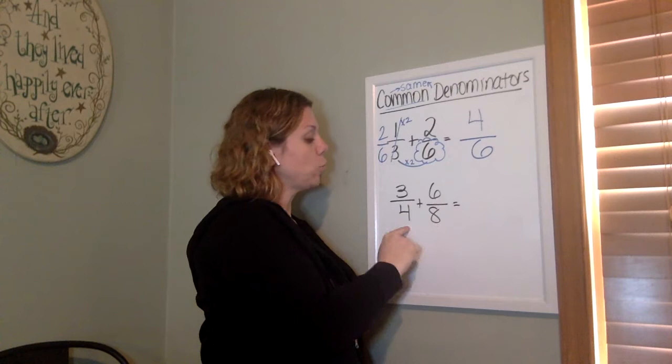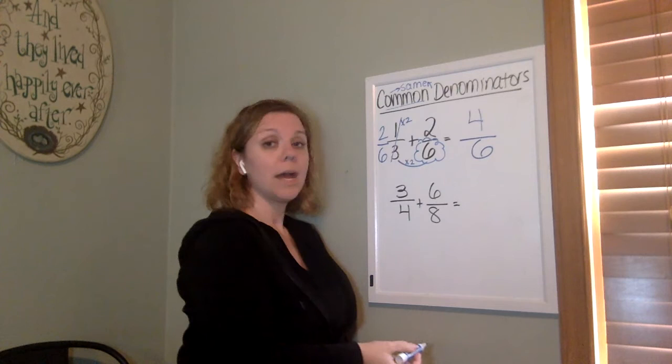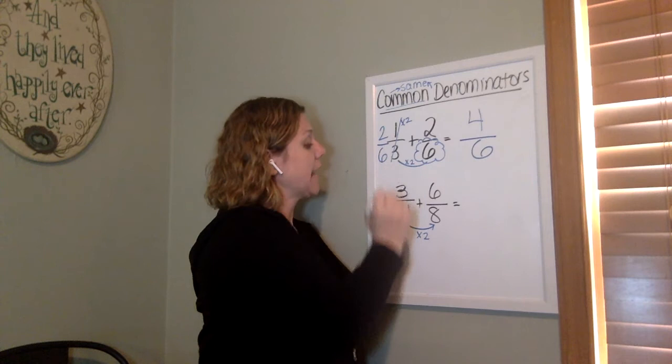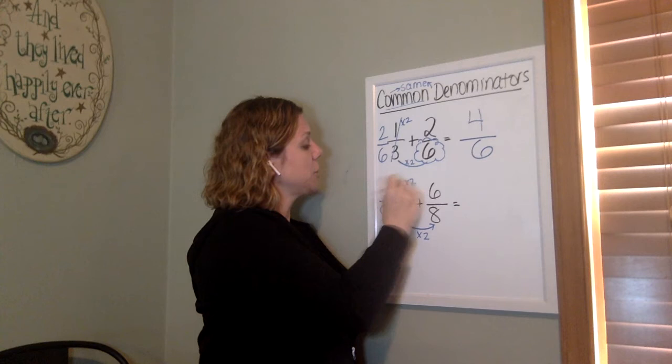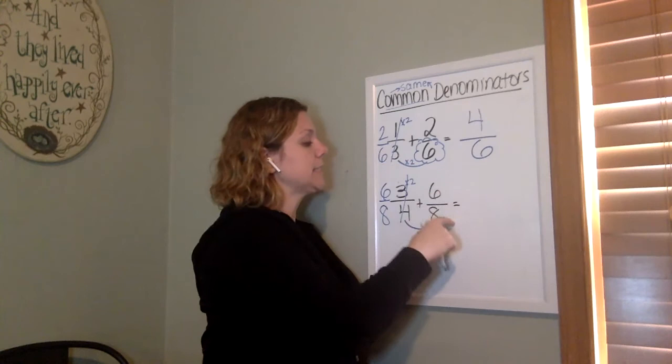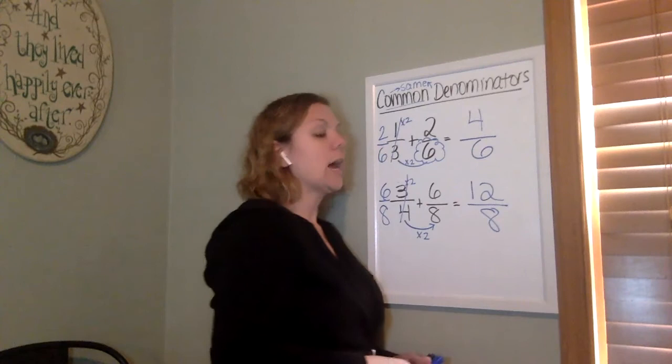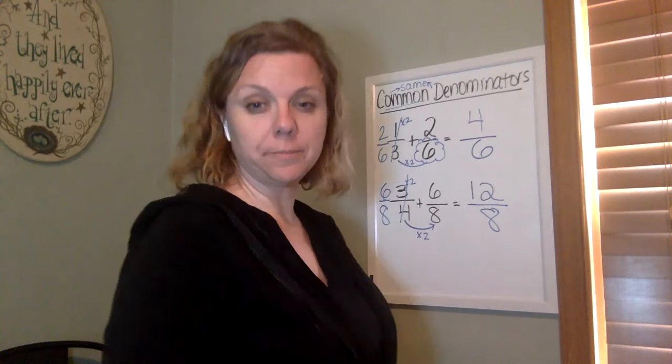Over here can I use one of my denominators as my common denominator to get them to be the same? I can. I can use eight. And again I know to get from four to eight what's my answer to my puzzle? Times two. Which means that four times two is eight and three times two is six. My new addition problem is six eighths plus six eighths which is twelve eighths. Which you may recall is an improper fraction but we're actually not going to tackle that today.